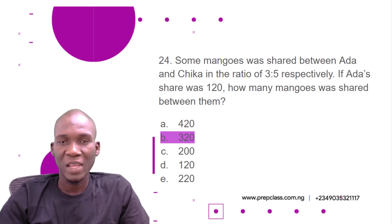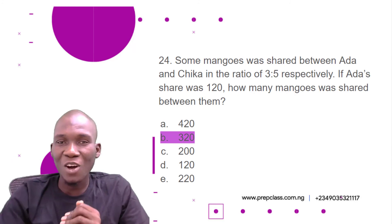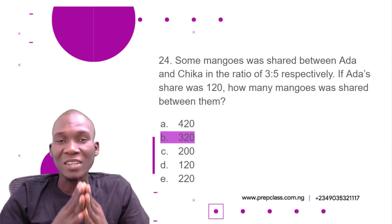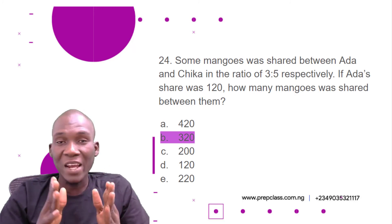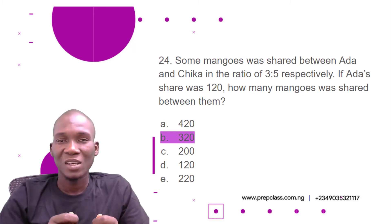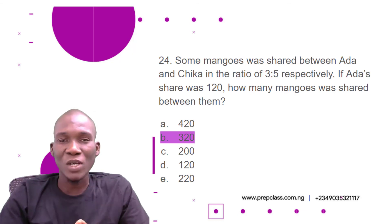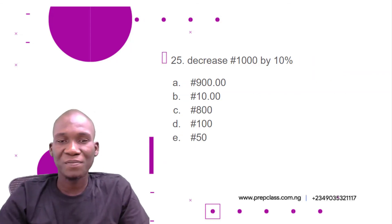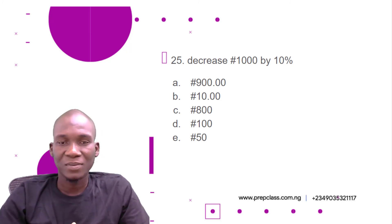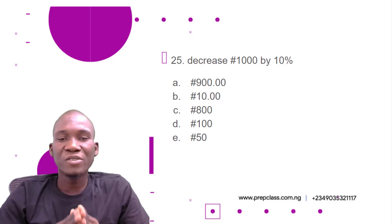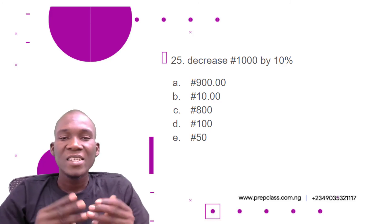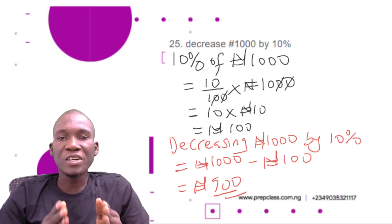I hope that was easy for you to understand. If you have questions, put them in the comment section and we will definitely answer. The aim is for you to understand the concepts and improve your learning skills. Now we move to question number 25: decrease 1000 naira by 10 percent. Options: A) 900 naira, B) 10 naira, C) 800 naira, D) 100 naira, E) 50 naira.